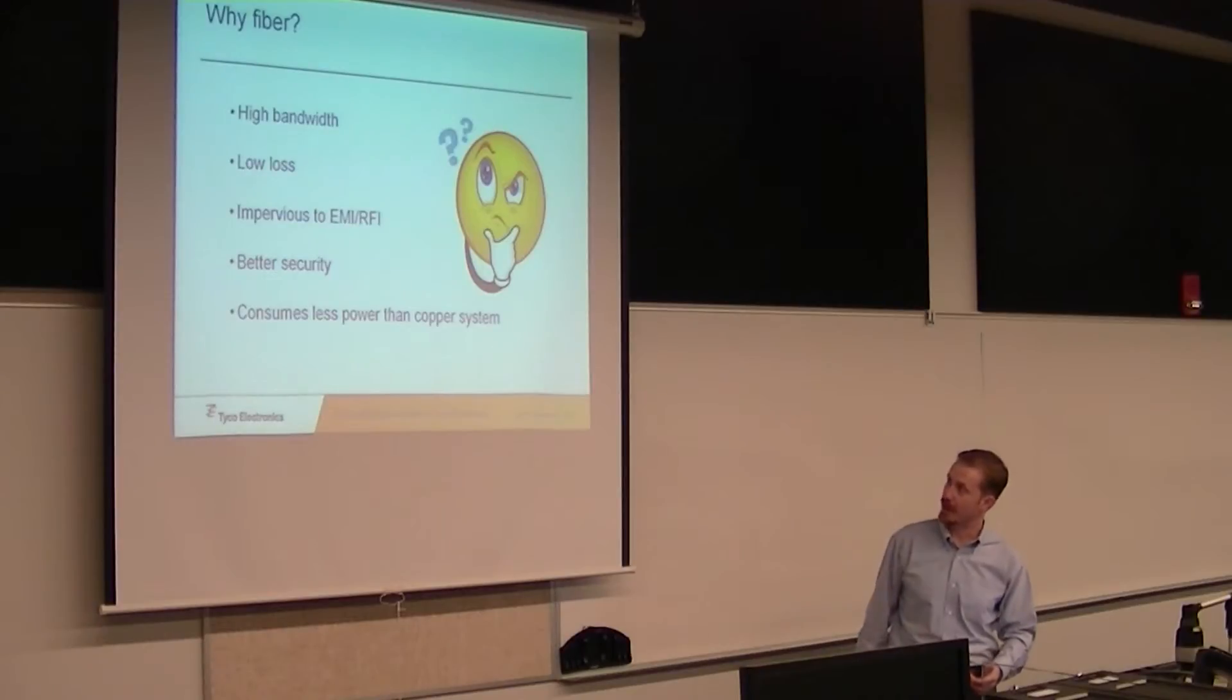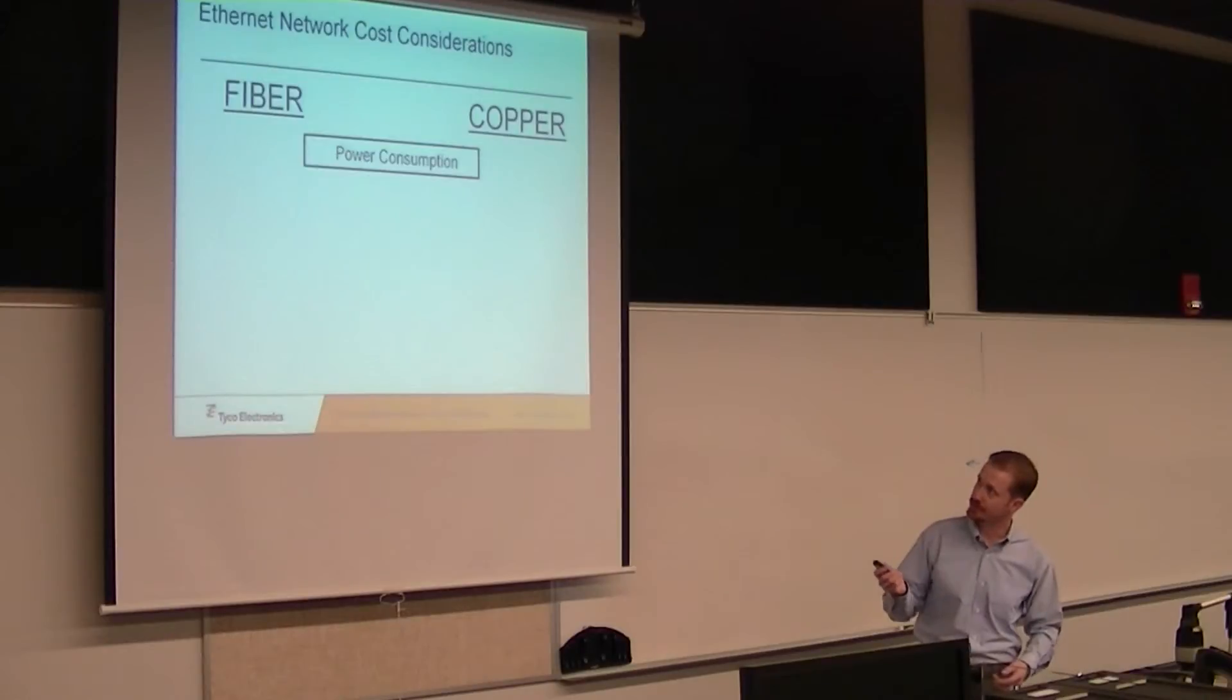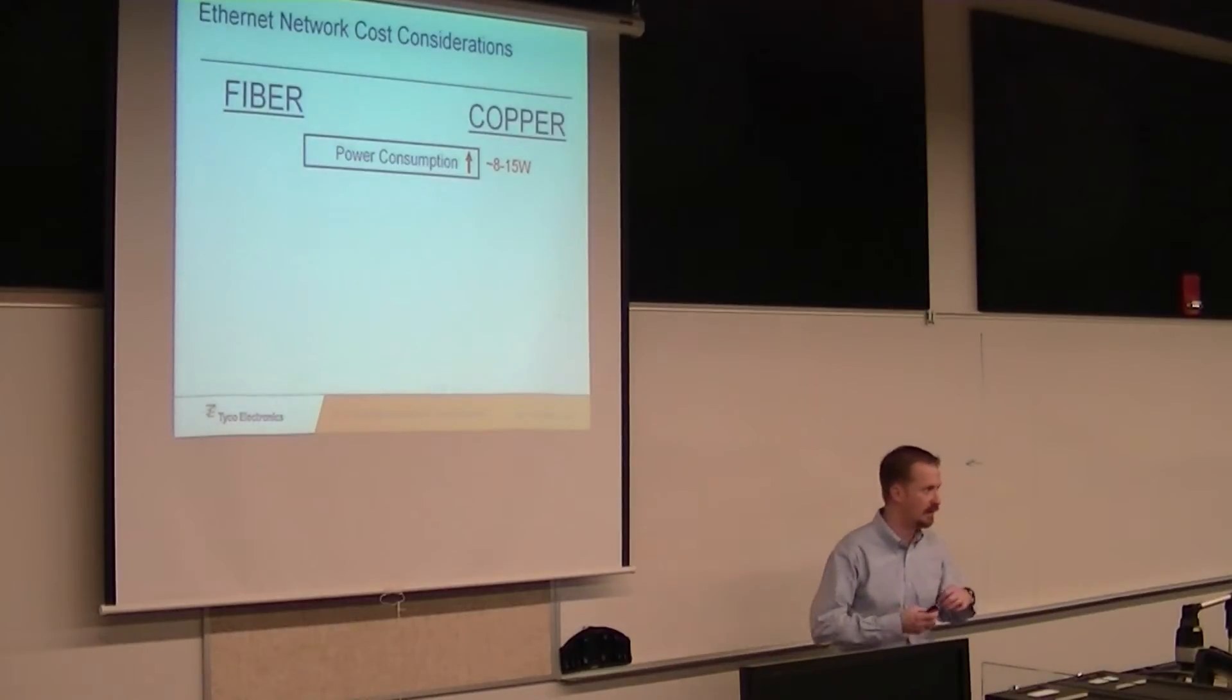You go in and put a T-tap or something like that into fiber, it's going to split your signal in half. And when you split that signal in half, it reduces quality on both ends, so it's immediately detected. That's why the government loves fiber. It consumes a lot less power than the copper system. We're going to cover cost considerations and power consumption. On a copper system, you're looking at about 8 to 15 watts per channel. But on fiber, you're looking at about 2 watts through your transceiver. Any time that you have power consumption, that's heat generated. So you need to cool that.